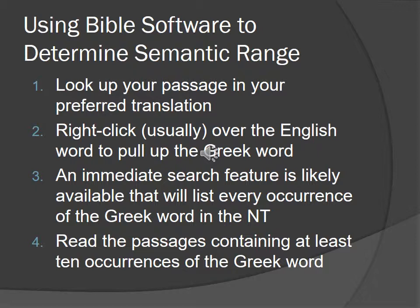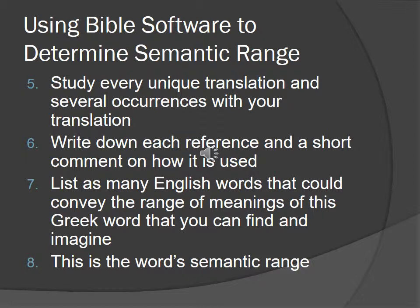Walk through that list and, like with the concordance, find at least ten passages that use that Greek word. Look up every unique English word that gets translated from that Greek word to get a feel for how they get used, as well as several occurrences of how the word gets used in your particular passage. Once you've done that, write down each reference and then a brief statement about how you see it used there. I want you to do this first in the scriptures themselves to get a feel for that before jumping into the lexicon. This is your word semantic range.